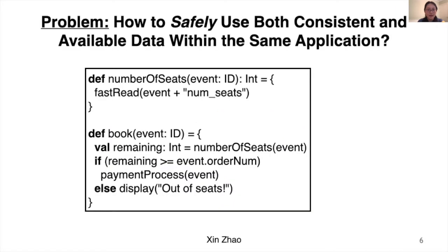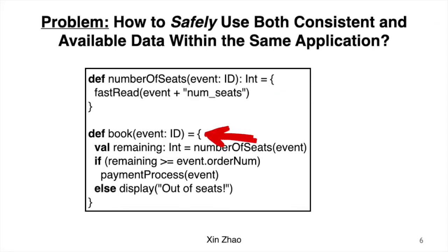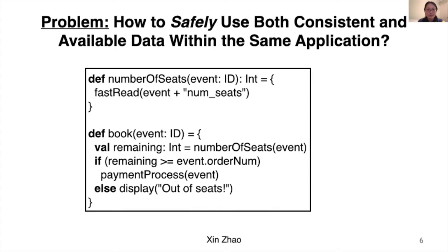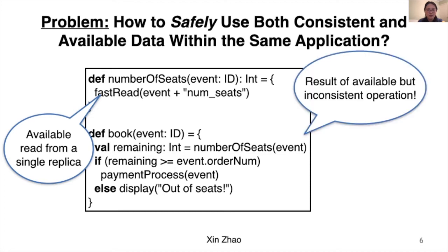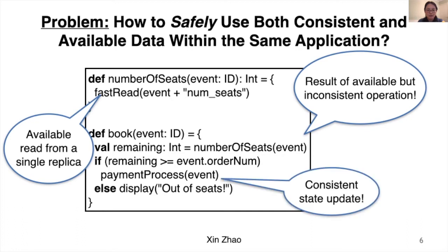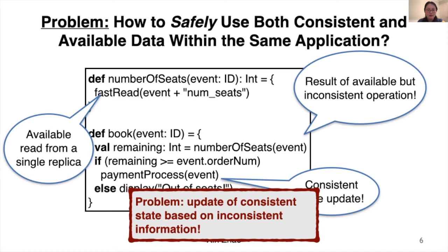The problem here is how to safely use both consistent and available data within the same application. Here is a ticket booking example. The function number_of_seats returns how many seats remain, and the function book first checks the remaining tickets and then processes the payment. We notice here that number_of_seats is implemented using a fast read, which is a common request for many databases that returns a value from one of the replicas. It responds in a highly available manner. However, this value might be out of date, which is now assigned to remaining. The remaining value influences the payment process, which is a consistent state update. This causes a problem: the update of consistent state is based on inconsistent information.